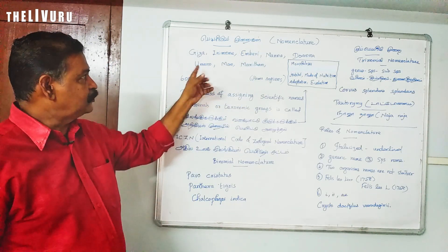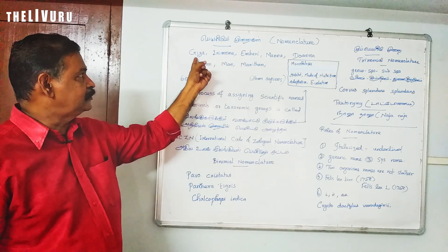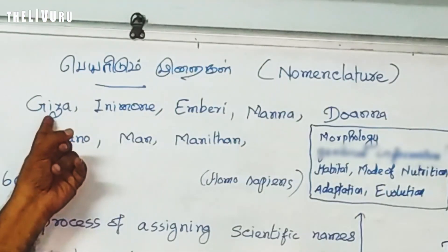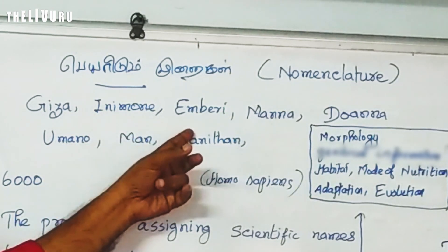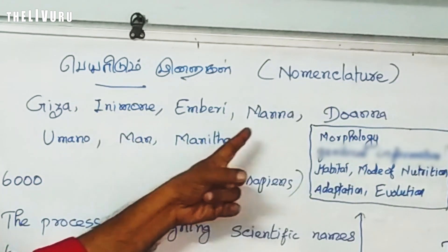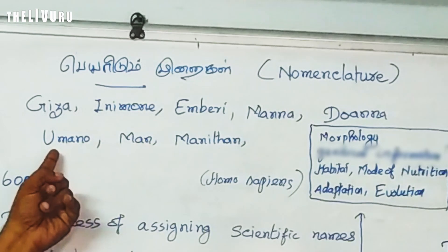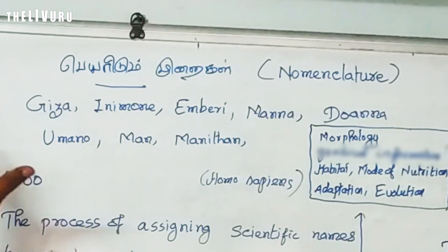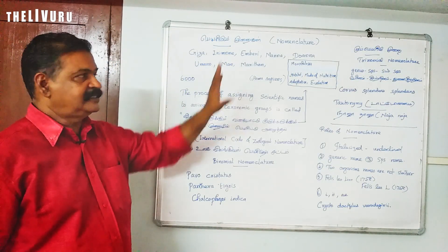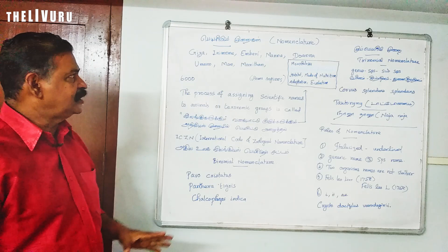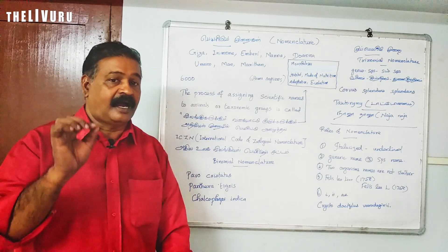If you have a textbook in Tamil medium or English medium, you will find different words for the same organism — gisa, inimone, emberi, manna, doana, umano. These are all the same words referring to one of the names of a particular organism.